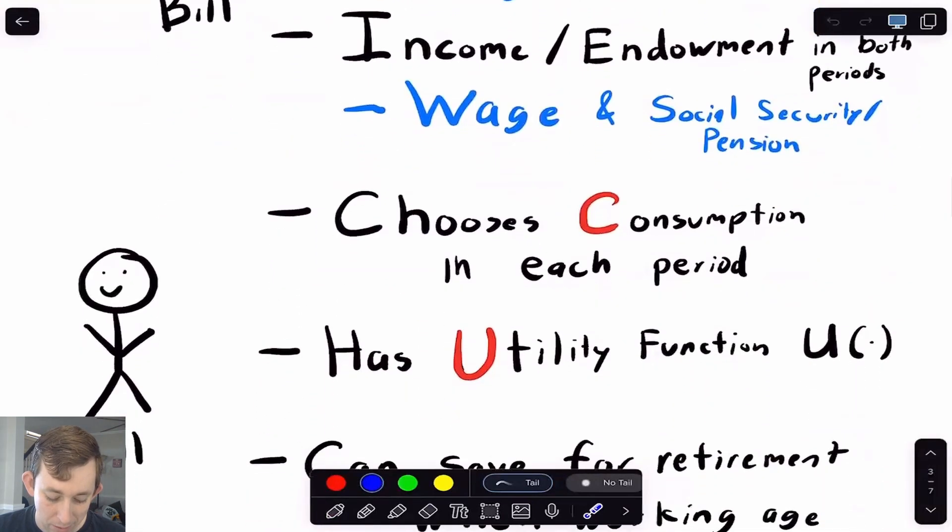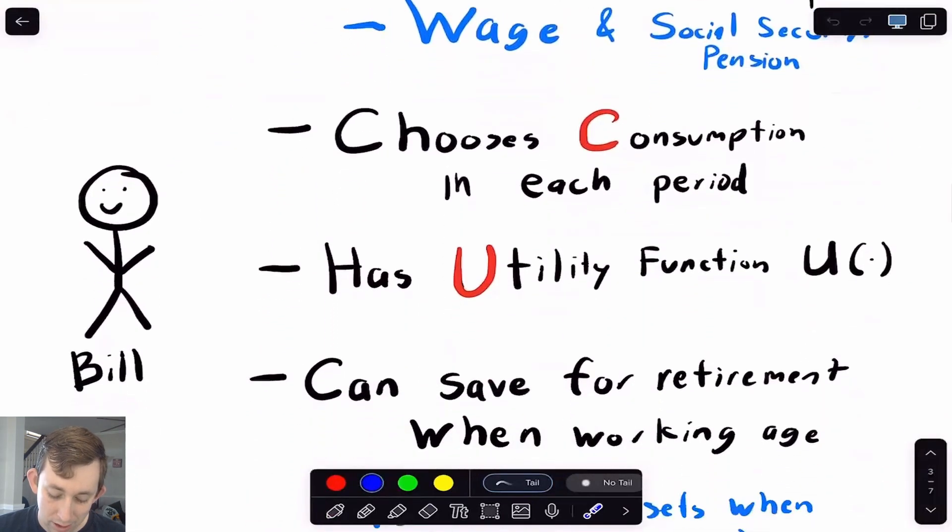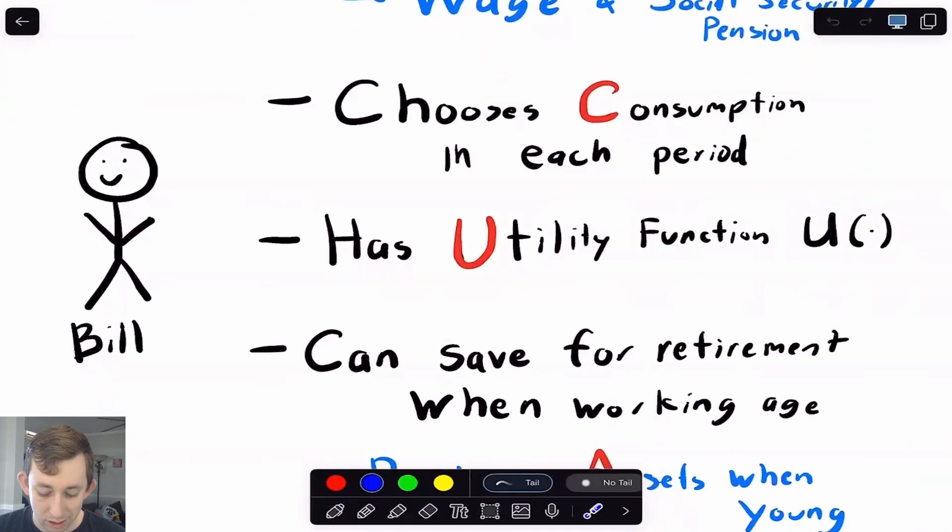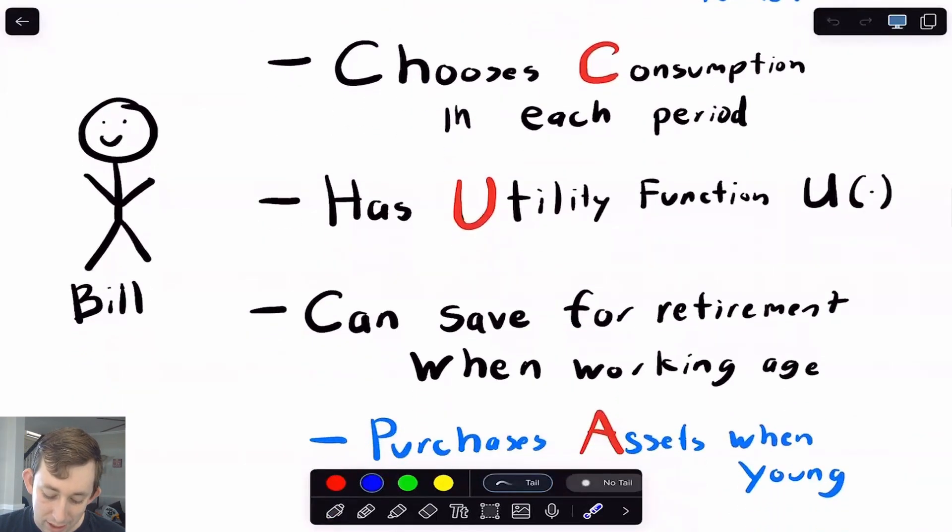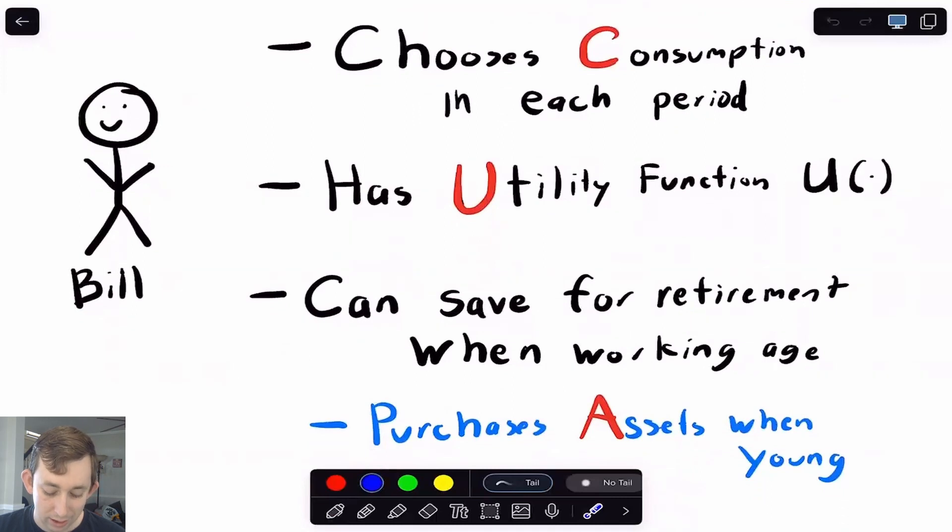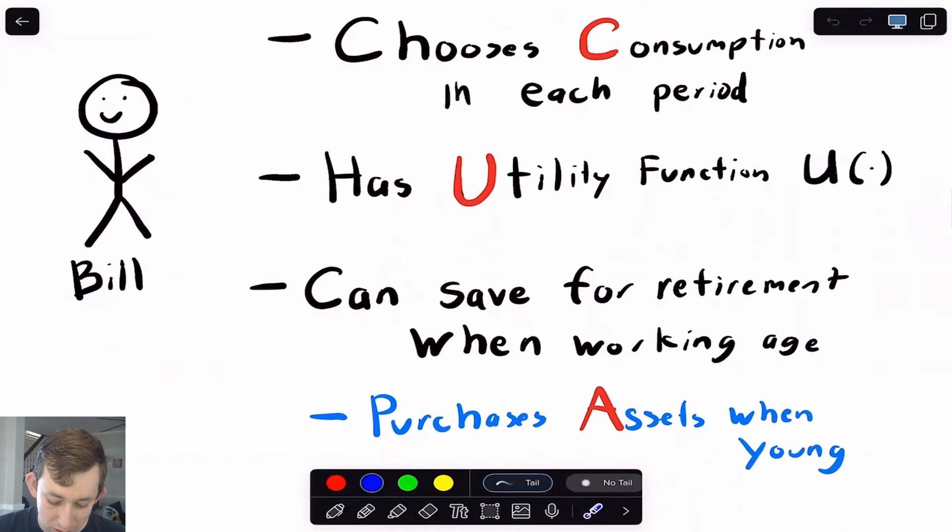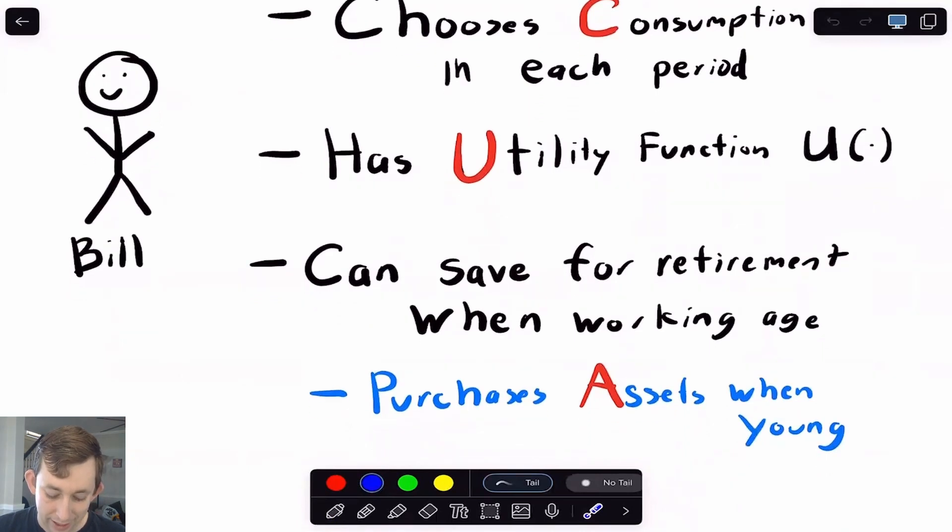Regardless of how you think about it, in every period, Bill gets to choose consumption, which we'll call C, he's going to have a utility function, some U of C. And what he can do when he's young, he can put some of that income that he gets when he's young into the bank, he can buy some stocks, he can buy some bonds, he can buy whatever assets that exist in this economy. So we'll just call them assets. And that is what he can do to save and have a little extra income when he's old. So that's what we have, we have consumption, we have utility, we have assets. And so now let's talk a little bit more about why this is called the overlapping generation model.